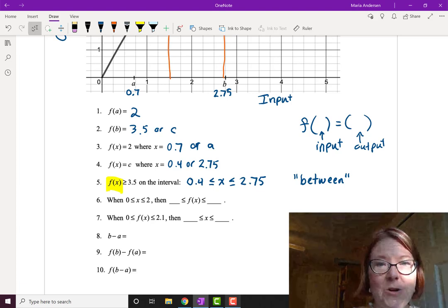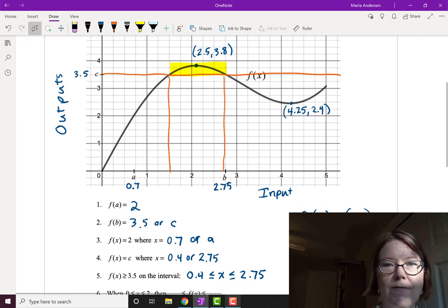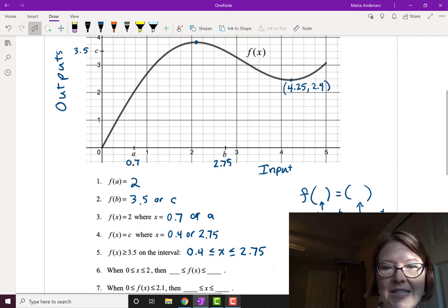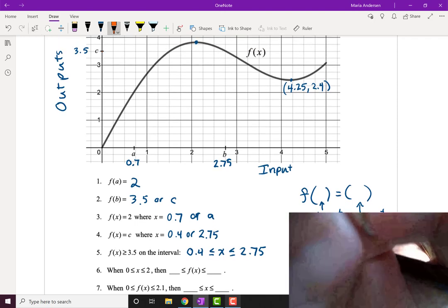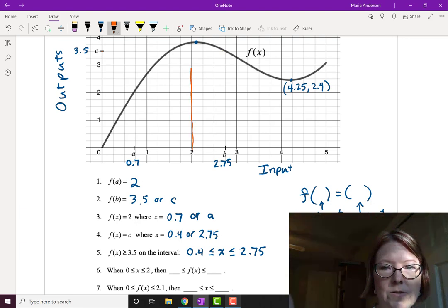Okay, the next one we reverse. And we say when x is between 0 and 2, then f of x is between what? So let's go back to our graph and let me do some erasing here so it's a little clearer to see. When x is between 0 and 2, let's draw that. x is between 0 and 2. So there's 2 and there's 0. Going with vertical lines up.